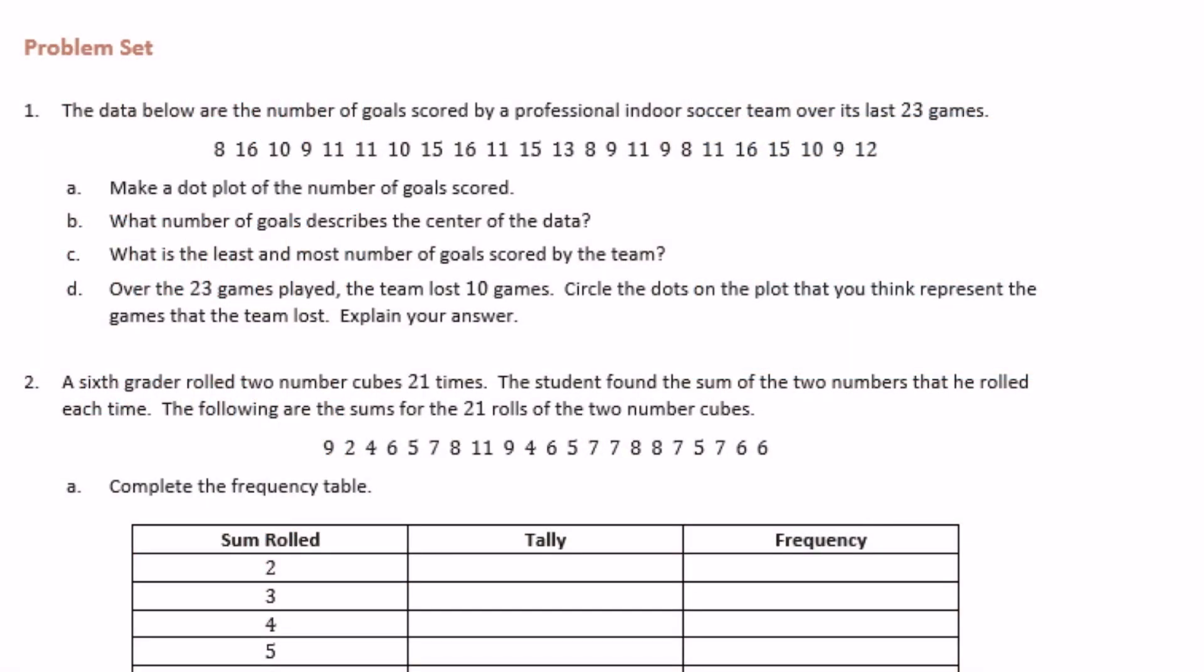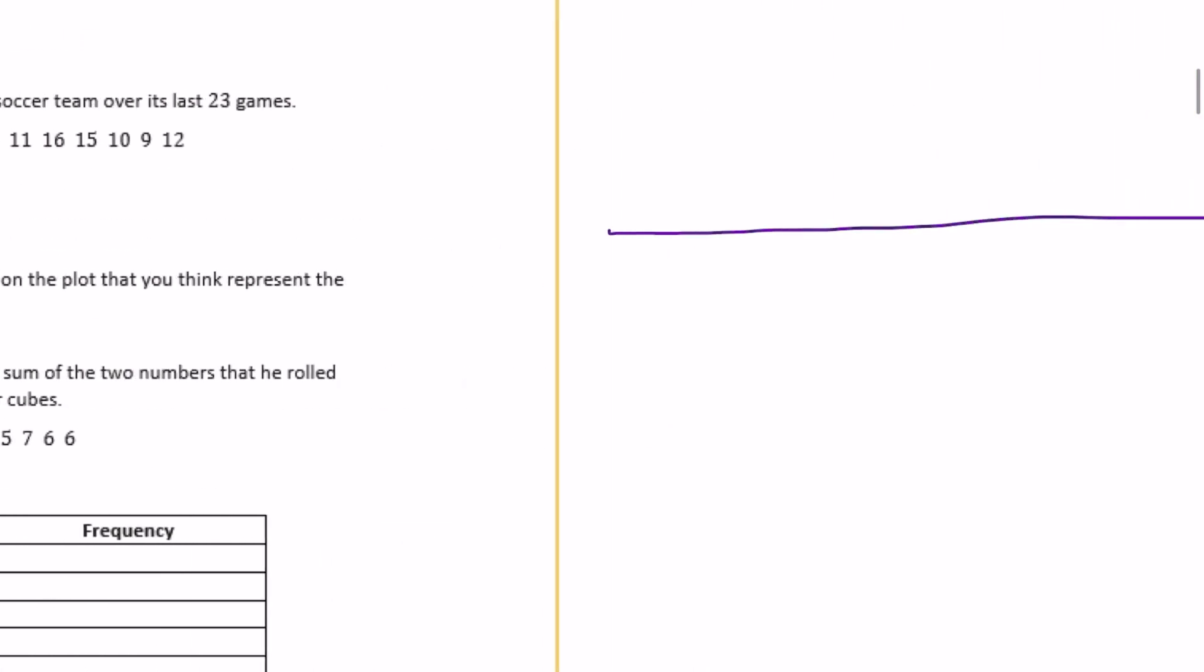Sixth grade module 6 lesson 3 problem set. The data below are the number of goals scored by a professional indoor soccer team over its last 23 games. Make a dot plot of the number of goals scored. Okay, so I'm gonna do that over here, draw a line and we're gonna have number of goals scored.